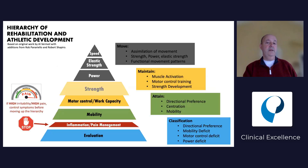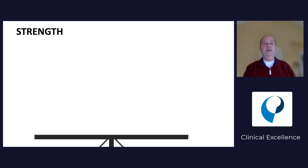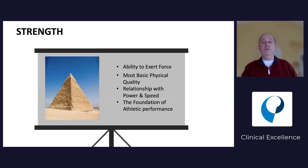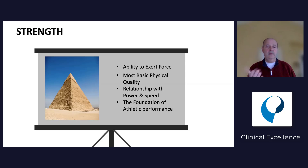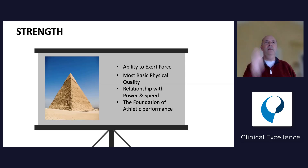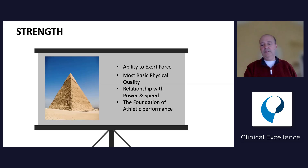Once we have motor control, we move to strength - the ability to exert force. It's the most basic physical quality we have. The relationship between power and speed is that if you don't have strength, you can't go to power, and you can't go to speed, because you need strength as your base. That quality of strength is important to go up the pyramid. If someone doesn't have good gastroc strength and tries to jump, as soon as they land they won't have the strength and will collapse like a folding chair.